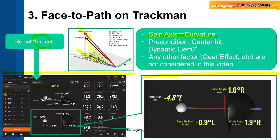Here is the precondition of this video: center hit and dynamic loft zero. Any other factors such as gear effect are not considered in this video — just the spin axis as the reason for curvature.